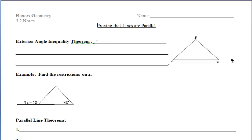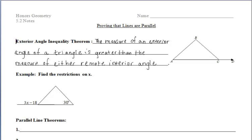Let's first start off by talking about the exterior angle inequality theorem. It states that the measure of an exterior angle of a triangle is greater than the measure of either remote interior angle. So if we look at this diagram here, our exterior angle is this red angle, angle BCD.